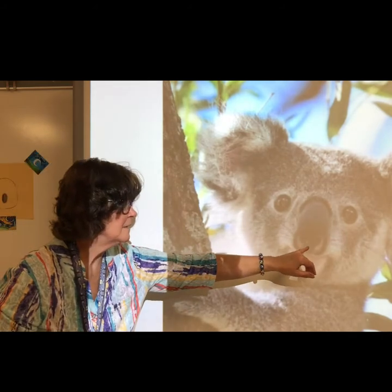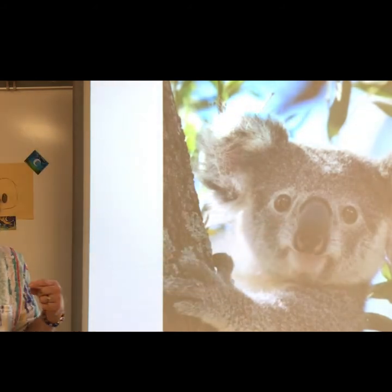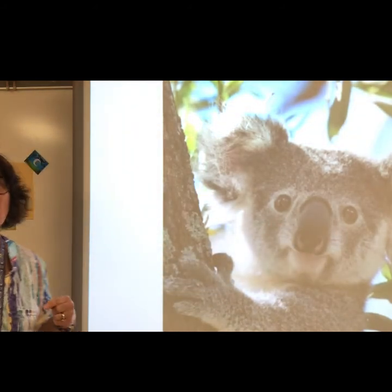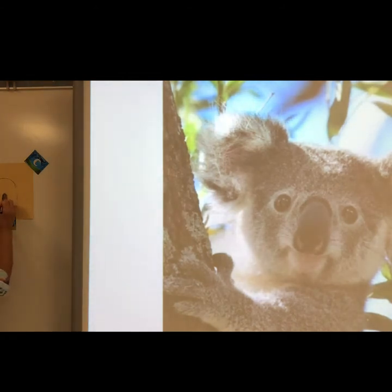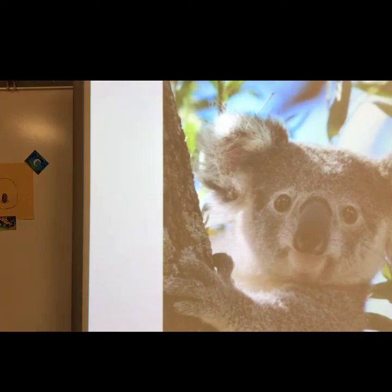Then I add the nostrils — the nostrils are what the koala breathes from. I draw two curved lines on the sides at the bottom of the nose, then trace over those lines to make them thicker and darker.